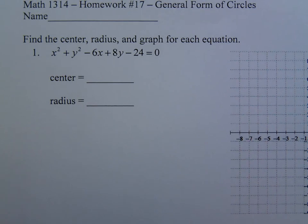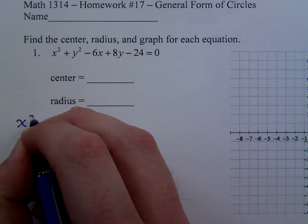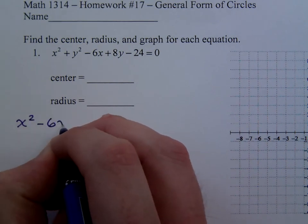What we have to do is complete the square, and we first start by rearranging our terms. So you put your x's together, so this is x squared minus 6x.